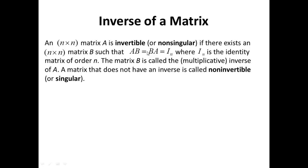The Inverse of a Matrix. We say that the n by n matrix A is Invertible or Non-Singular if there exists another n by n matrix B such that the product A times B equals B times A and that equals In, where In is the Identity Matrix of order n.